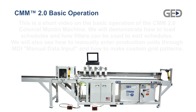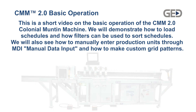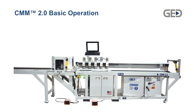This is a short video on the basic operation of the CMM 2.0 Colonial Mutton machine. We will demonstrate how to load a schedule and how filters can be used to sort the schedules. We will also see how to manually enter production units through MDI, manual data input, and how to make custom grid patterns.